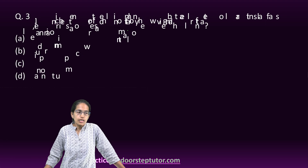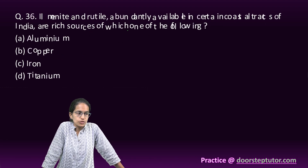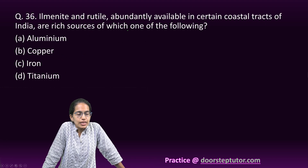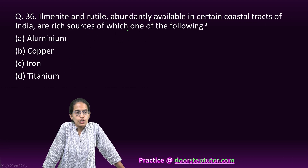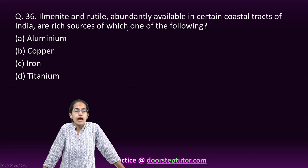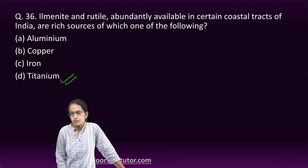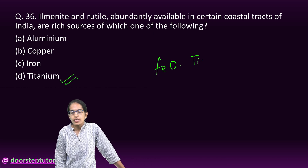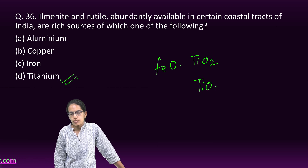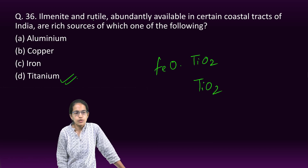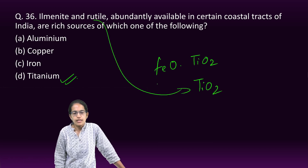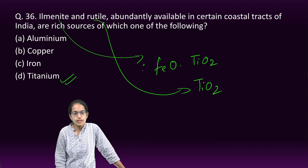Ilmenite and Rutile are oxides of Titanium. Ilmenite is FeTiO₃ and Rutile is TiO₂. So both ilmenite and rutile are examples of titanium-bearing minerals, and the correct answer is Titanium.